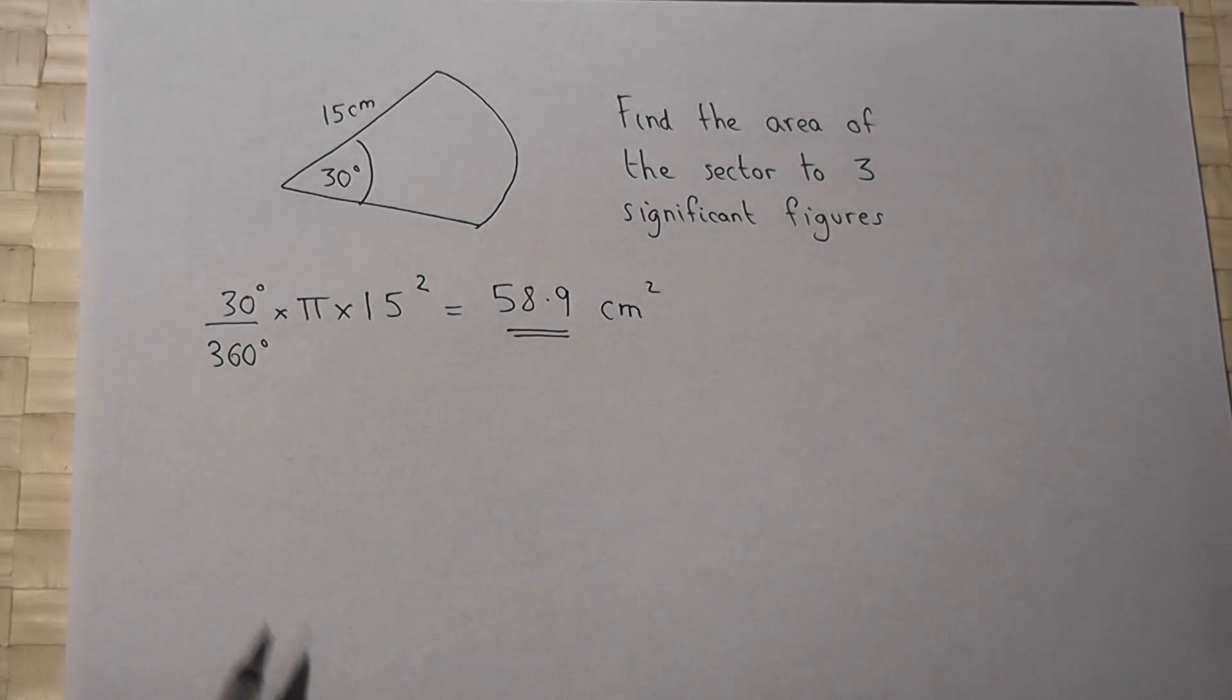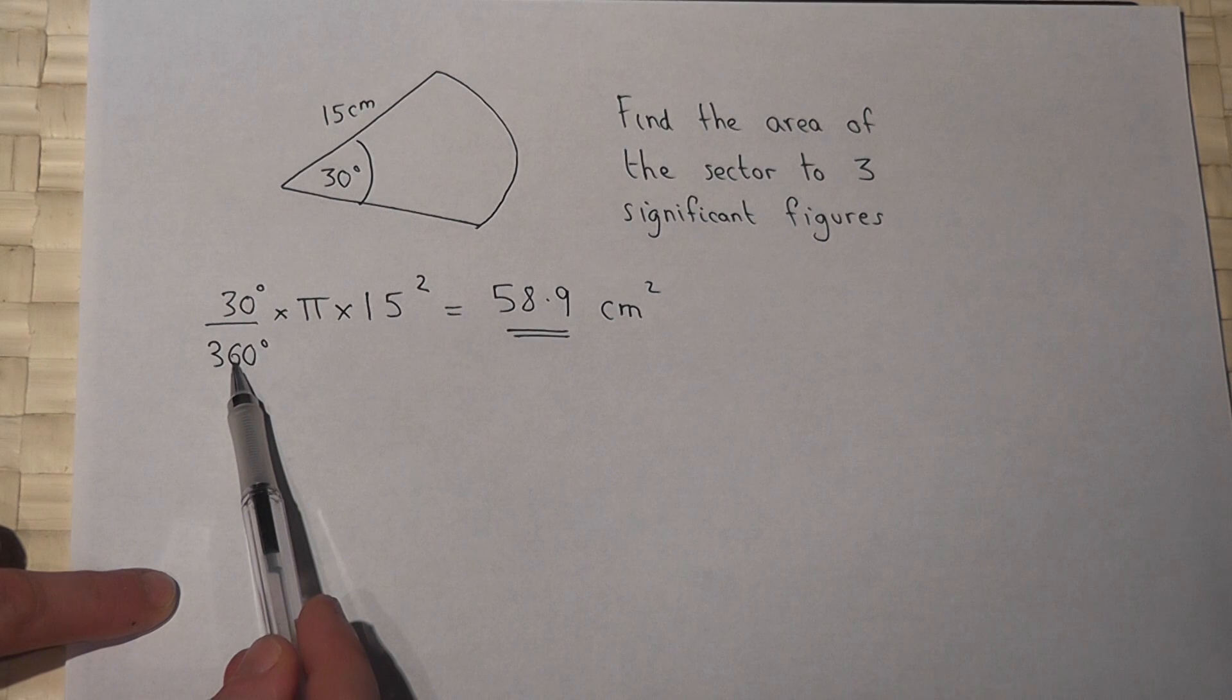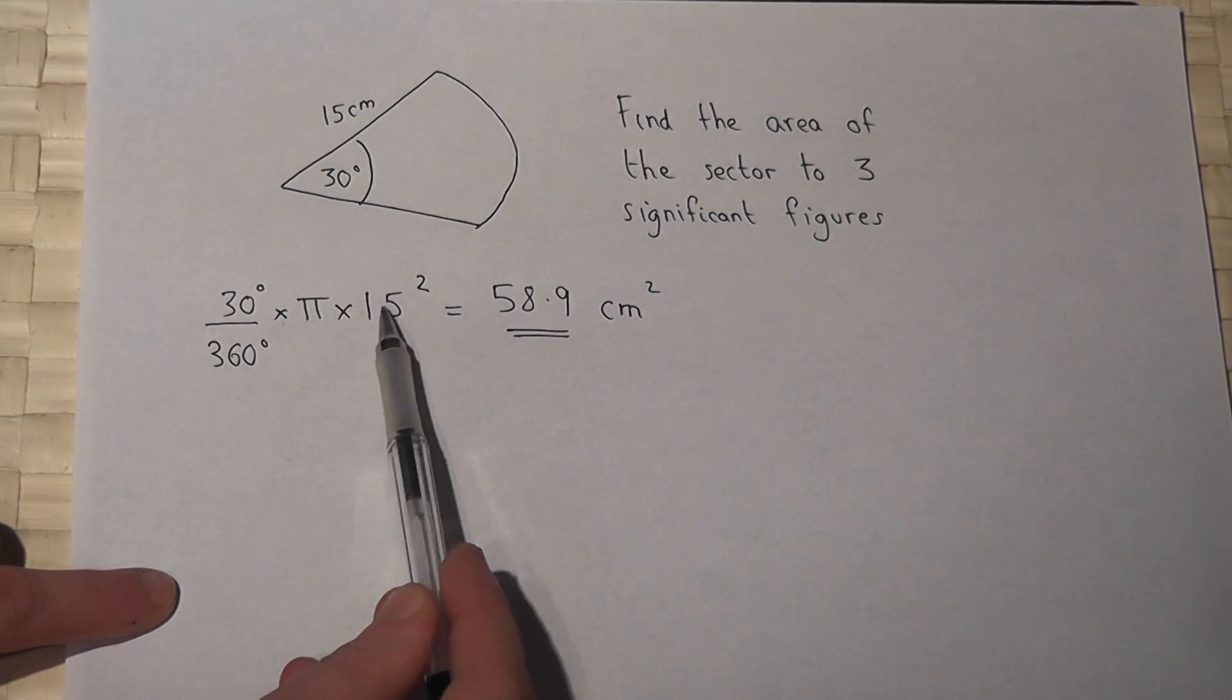So again to find the area it is a fraction of a full circle times by pi r squared.